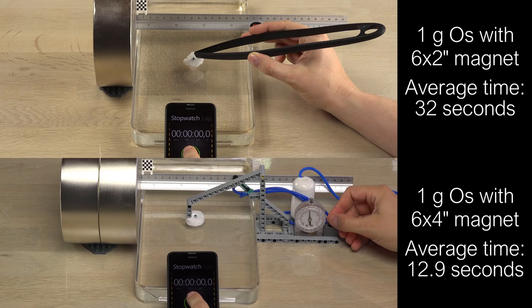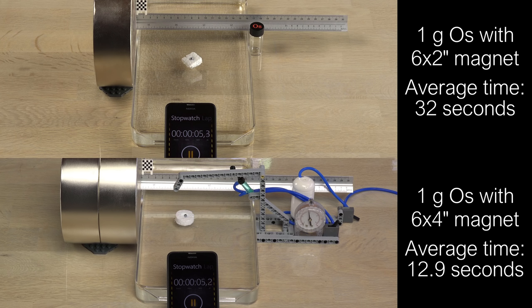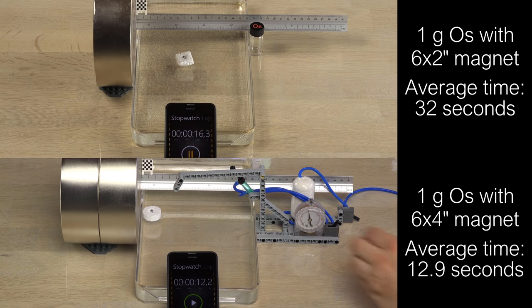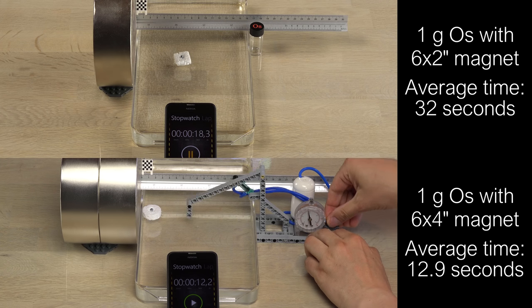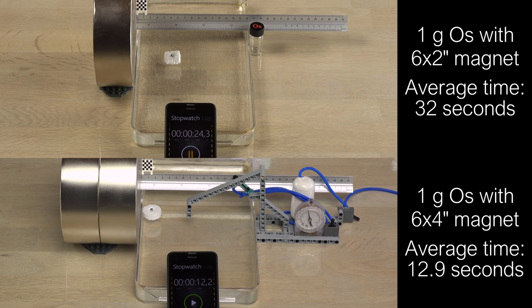The first surprise is how much faster the double magnet attracts the osmium. With the 6 by 2 inches magnet the average time for the 1 gram sample was 32 seconds. I tried 25 times with the 6 by 4 inches and it was more than twice as fast. The average time for the 1 gram sample was around 12.9 seconds. The setup may not be 100% similar but the new magnet is definitely better at detecting the very weak paramagnetism of osmium. Nice.